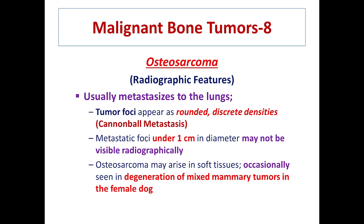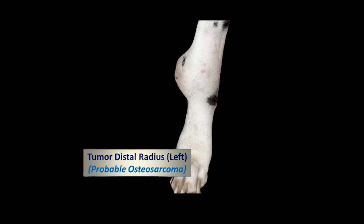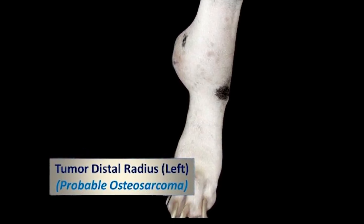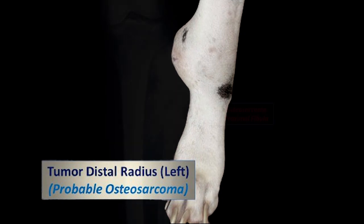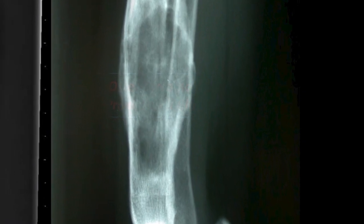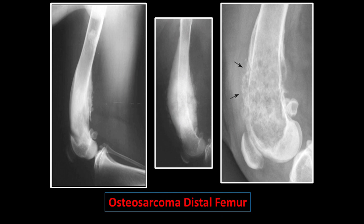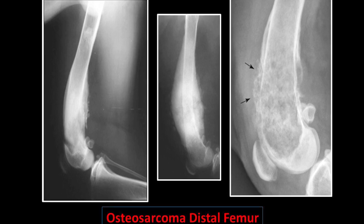Osteosarcoma may occasionally arise in soft tissues, such as in degeneration of mixed mammary tumors in female dogs. In this picture you can see an outgrowth in the distal radius of the left side that may be osteosarcoma. This is the proximal fibula involved in mixed-type osteosarcoma. You can see osteoblastic or osteolytic changes at the affected site. This is osteosarcoma of the distal radius in which lytic changes are very clear. Histopathology should always be recommended for confirmation in such cases.